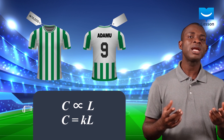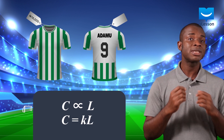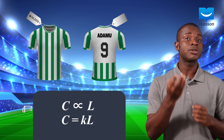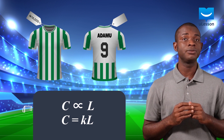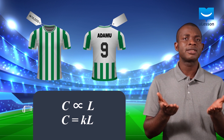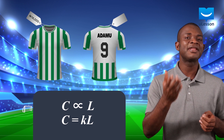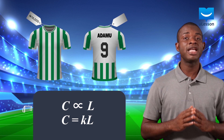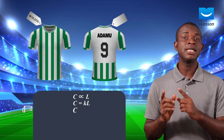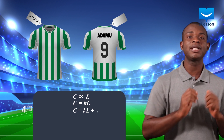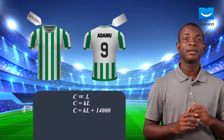We now have C equals KL. We can now add the constant term, which is the given cost of the jersey alone. In this case, the cost is 14,000 Naira. This gives us C equals KL plus 14,000.